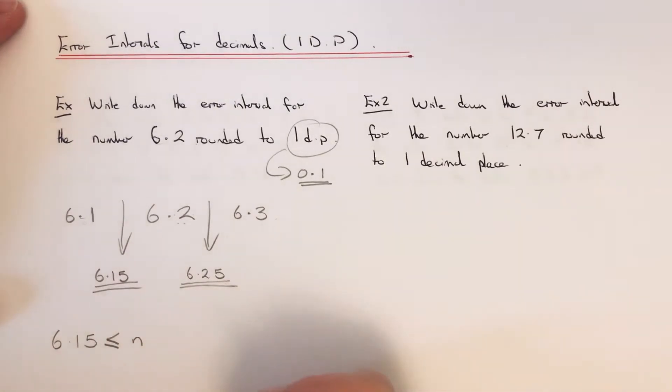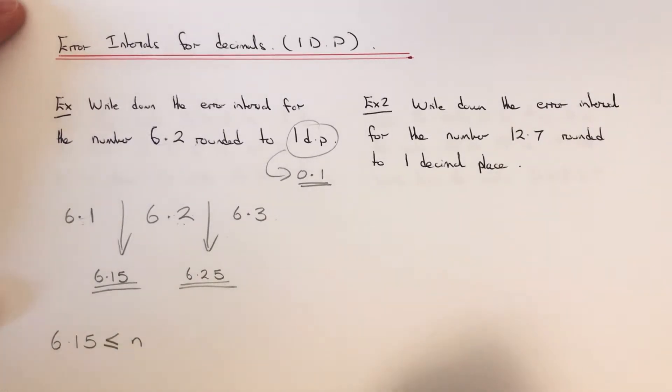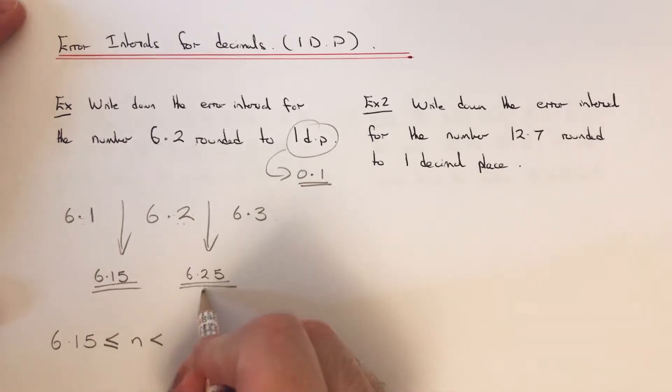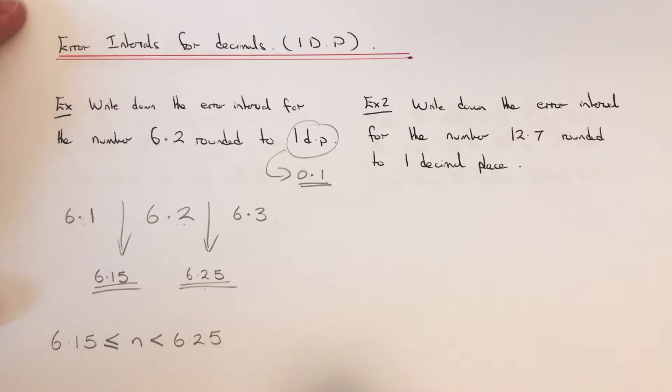It usually tells you what the letter is when you have a question in the test. Then you put a less than sign and then you put the upper bound at the end. So let's have a look at the second example.